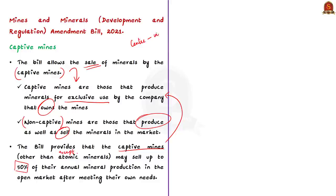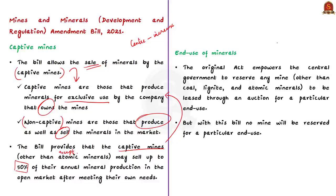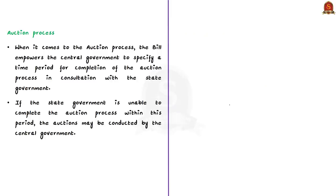The next important change is the removal of restrictions on the end use of minerals. The original act empowers the central government to reserve any mine other than coal, lignite, and atomic minerals to be leased through an auction for a particular end use. But with this bill, no mine will be reserved for a particular end use. The bill also empowers the central government to specify a time period for completion of the auction process in consultation with the state government. If the state government is unable to complete the auction within this period, auctions may be conducted by the central government.